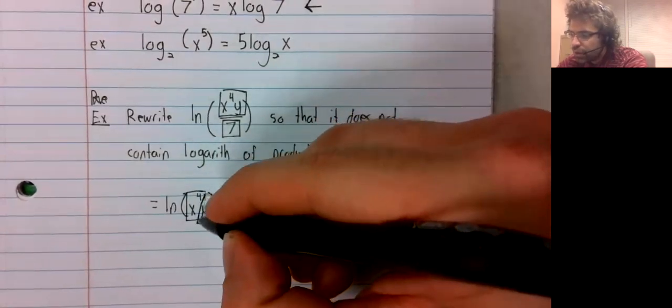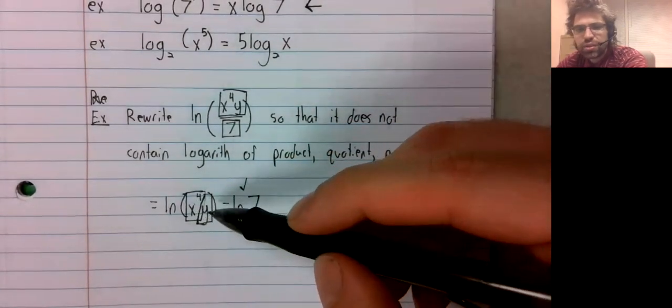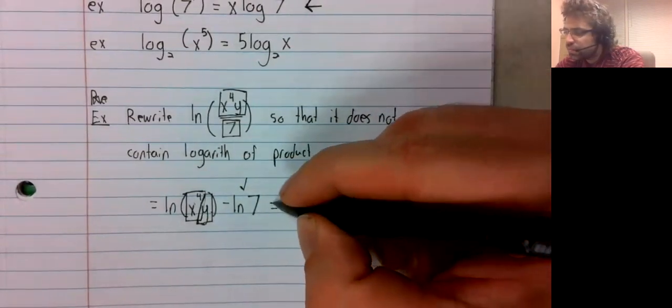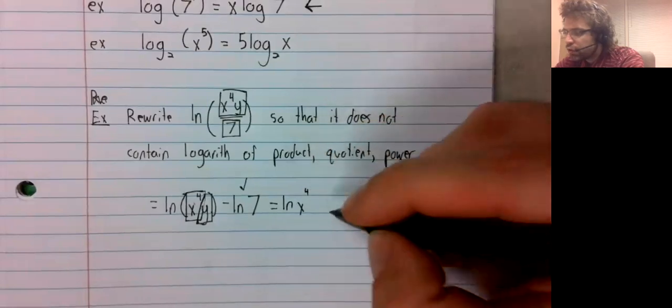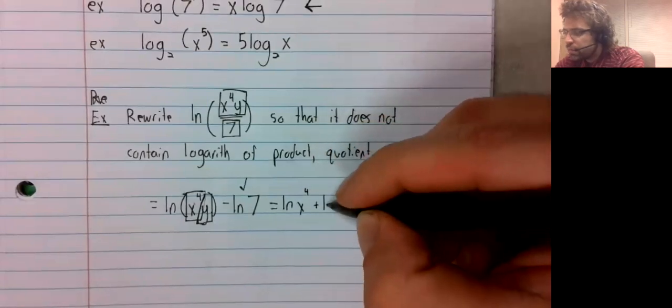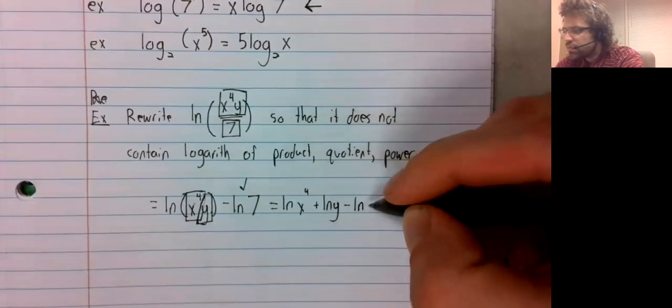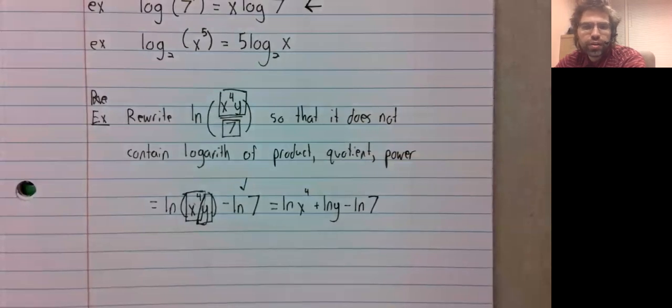But here we have a product. This times this. So the logarithm of a product is the sum of logarithms.